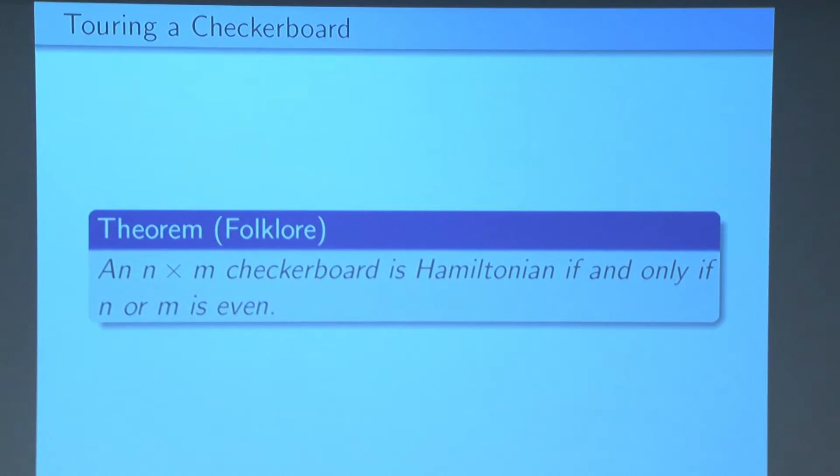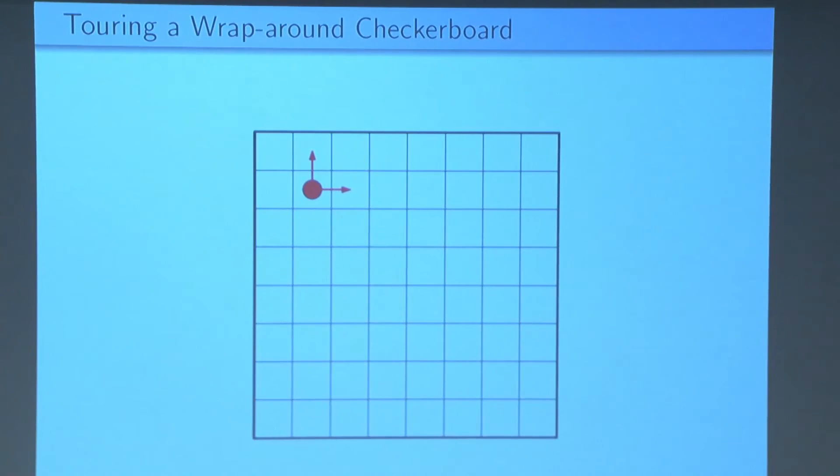Now let's consider a similar but slightly more complicated problem. Suppose our checker can only move up and right, but we're on a special checkerboard, we're on the wraparound checkerboard. So whenever the checker falls off the right edge, it gets placed back on the left edge in the same row. Whenever it falls off the top edge, it gets placed back on the bottom edge in the same column.